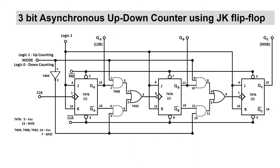Here we are going to design a 3-bit asynchronous up-down counter using JK flip-flops, so we will require 3 JK flip-flops. The circuit diagram of a 3-bit asynchronous up-down counter using JK flip-flop is shown below. Since this is an asynchronous up-down counter, we will need a mode selection switch to switch between up-counter and down-counter.